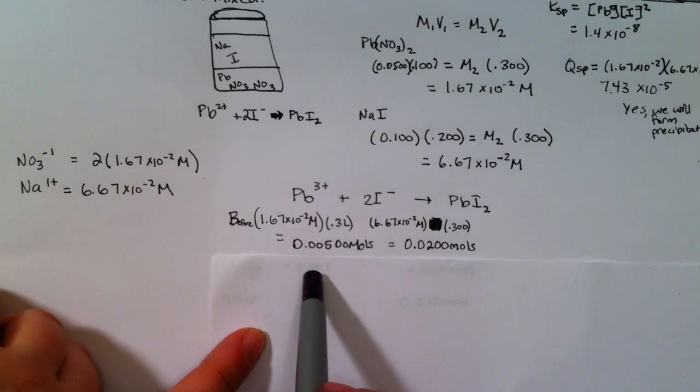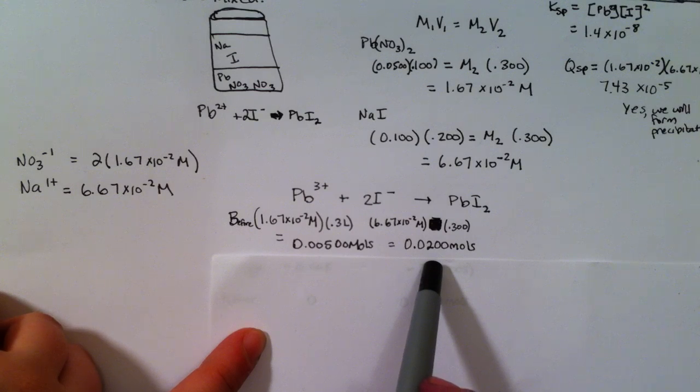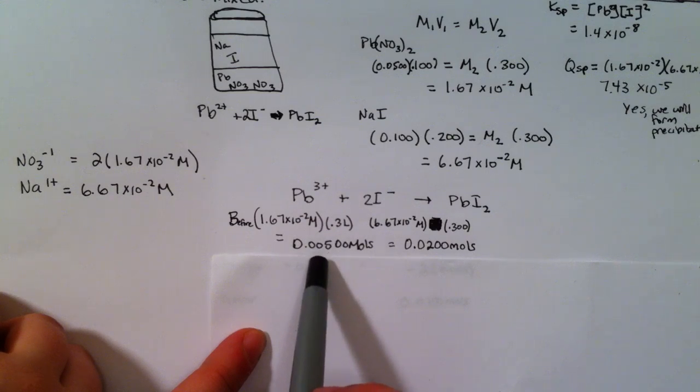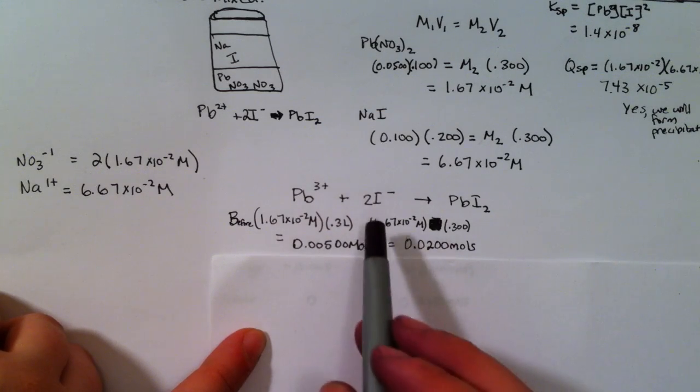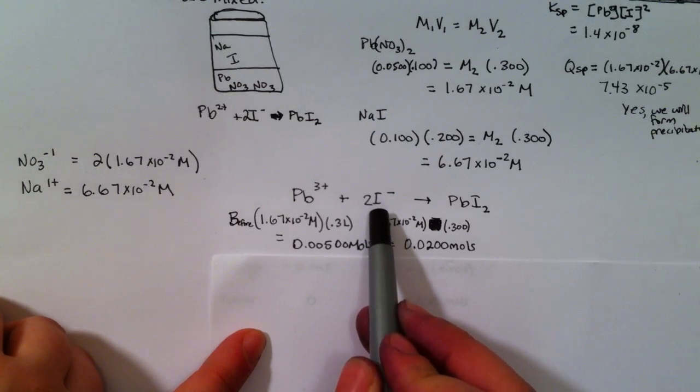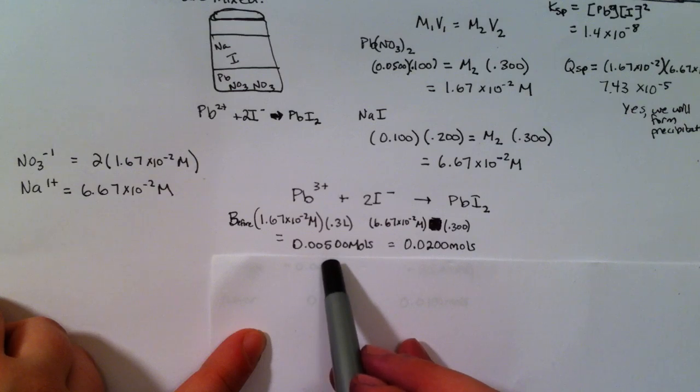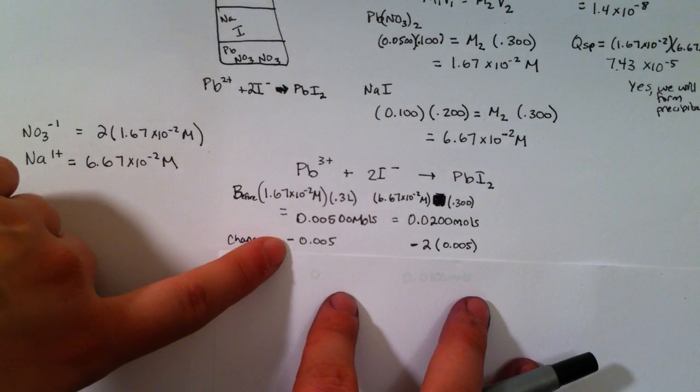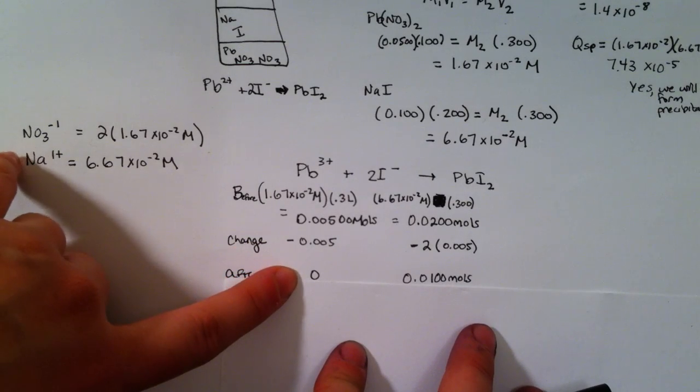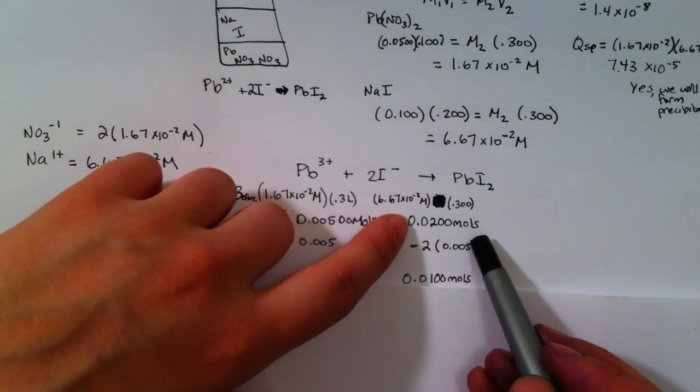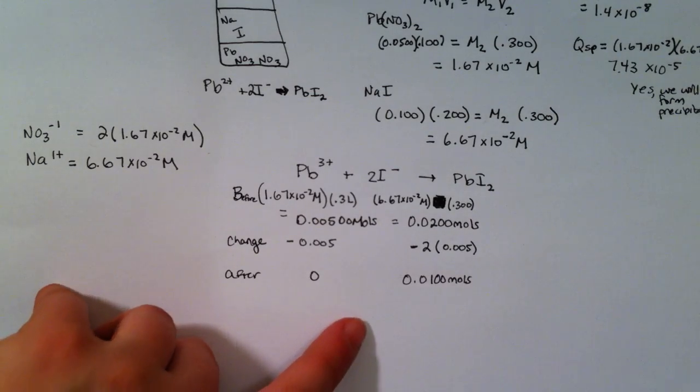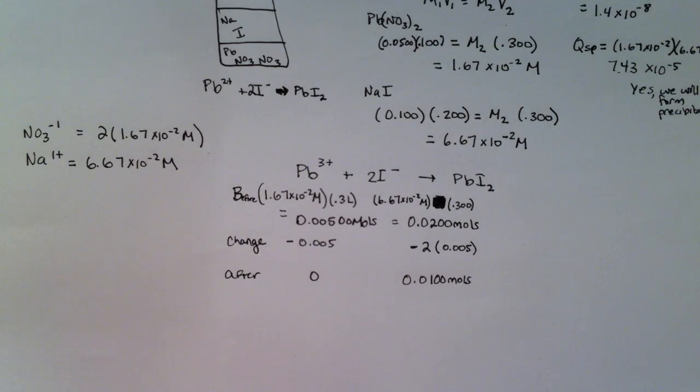Now, just looking at these, I can see that this one is the bigger and I know that I'm limited by this. You do, this is trigonometry, so you do have to take into account the fact that I need two iodines for every one lead, but this number is still smaller. So my change is going to be, I'm going to lose all my lead and have no ions left over. And I'm going to lose two times whatever my lead is. And that leaves 0.0100 moles left over.